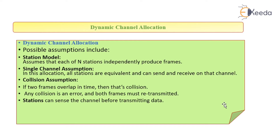Collision assumption: if two frames overlap in time, then we say there is a collision. Any collision causes an error and both frames must be retransmitted. The stations can sense the channel before transmitting the data. This is about the channel allocation problem in the data link layer.